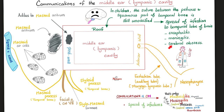Complications include encephalitis, meningitis, cerebral abscess, etc. Also behind the middle ear, there is the aditus to the mastoid antrum, which leads to the mastoid antrum and mastoid air cells, which can lead to spread of infection — mastoiditis.